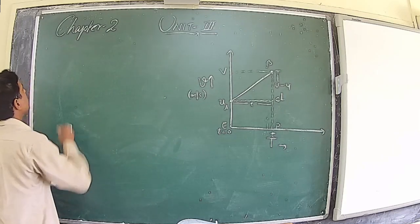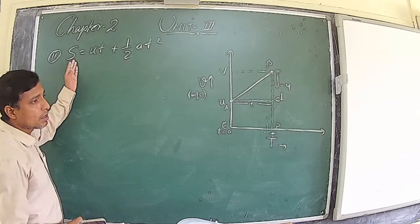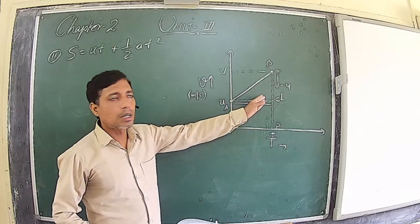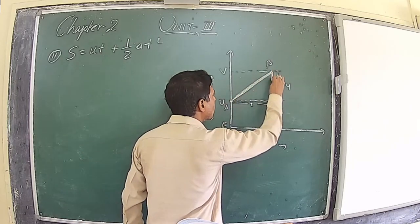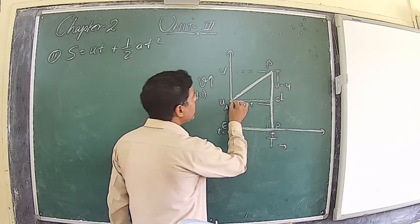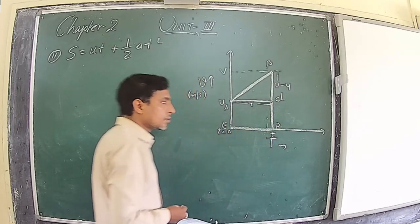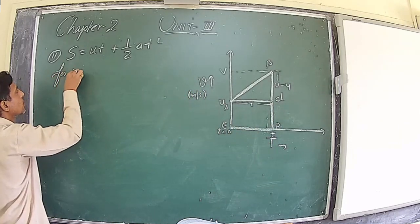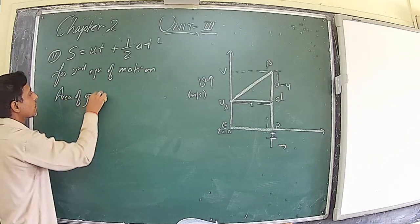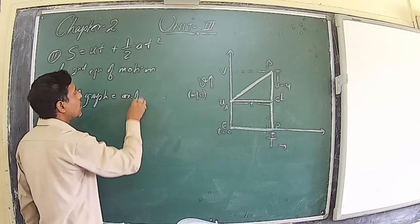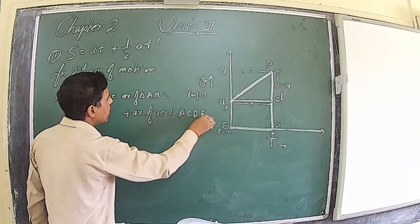For the second equation of motion, s = ut + ½at², we note that displacement is found from the v-t graph by finding the area enclosed by the graph. The area enclosed is a trapezium shape, which we divide into two parts: a triangle ABC and a rectangle ACDE. So the area of the graph equals area of triangle ABC plus area of rectangle ACDE.